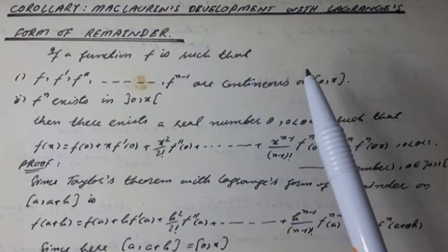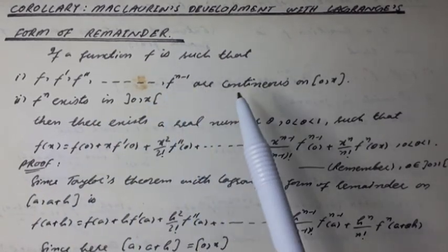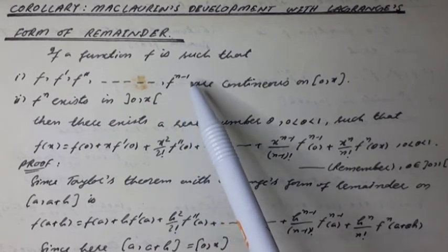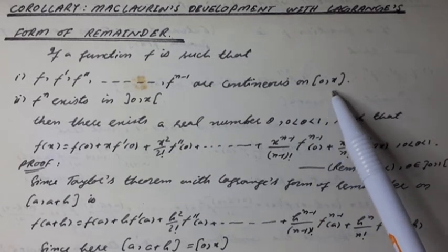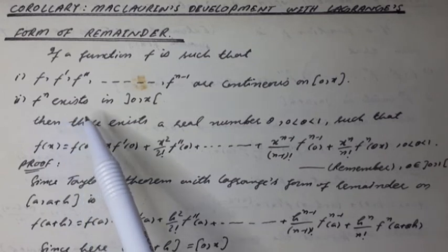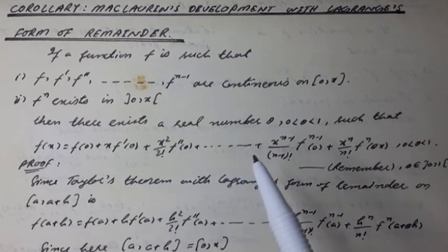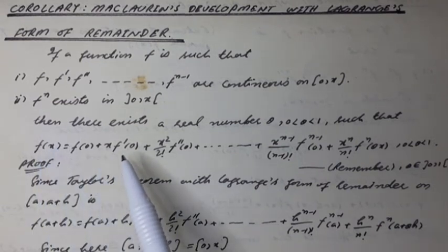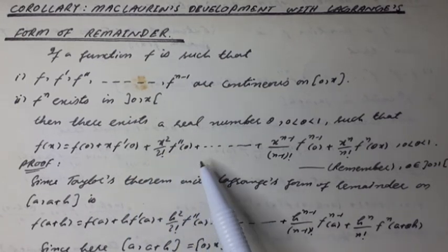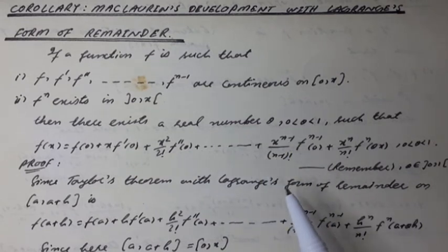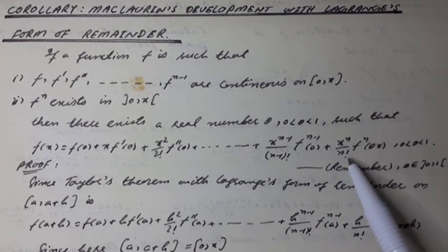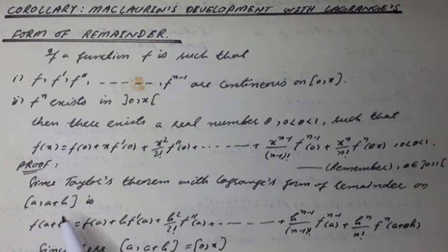Maclaurin's development with Maclaurin's form of remainder. Statement: If a function f is such that f, f', f'', ..., f^(n-1) are continuous on the closed interval [0, x], and the nth derivative of f exists in the open interval (0, x), then there exists a real number θ where 0 < θ < 1 such that: f(x) = f(0) + x·f'(0) + x²/2!·f''(0) + ... + x^(n-1)/(n-1)!·f^(n-1)(0) + x^n/n!·f^(n)(θx).